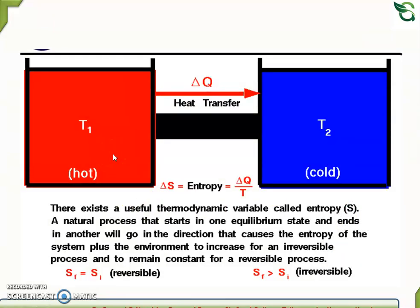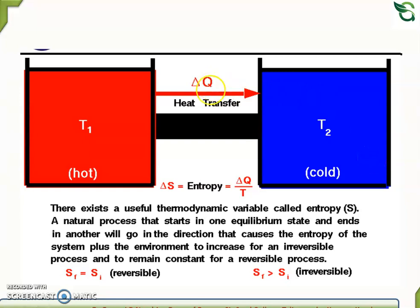T1 is a hot object and T2 is a cold object. From here, the heat transfer is done from T1 to T2. Delta Q is the heat transfer. The entropy delta S is equal to delta Q divided by T.